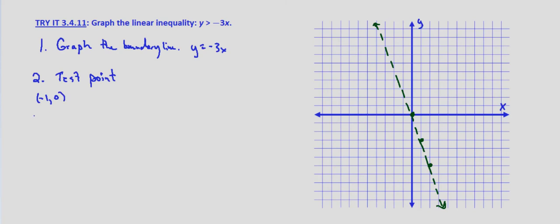So is 0 greater than negative 3 times negative 1. So 0 greater than 3. That is a false statement, which indicates that we would want to graph on the other side. We would want to shade on the other side of our boundary line.